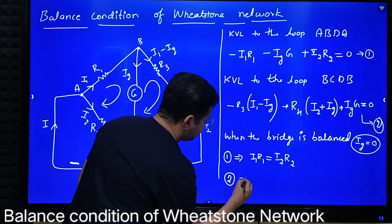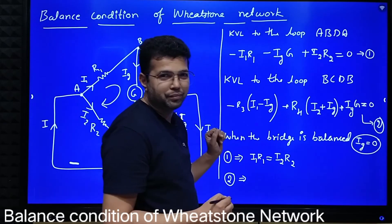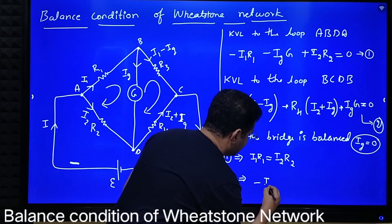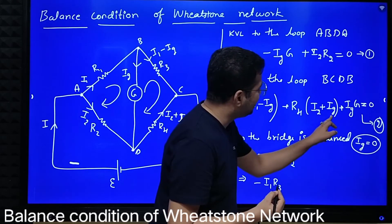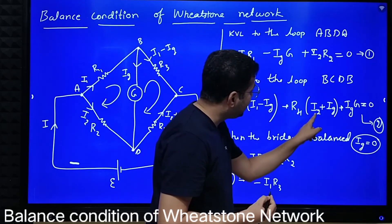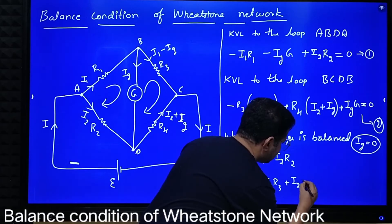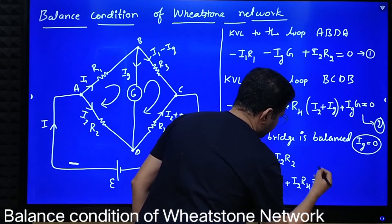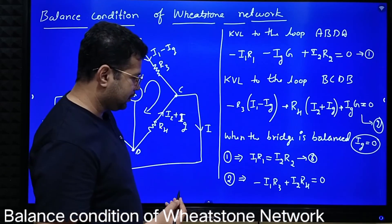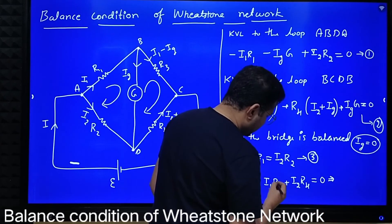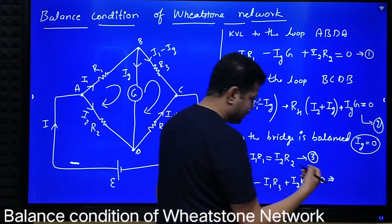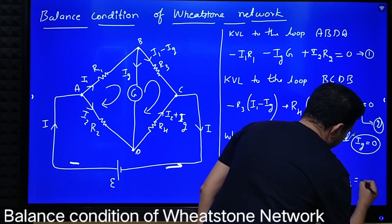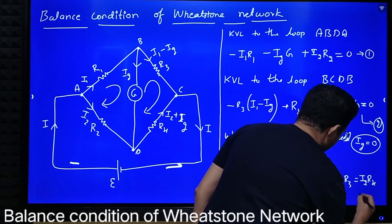Now for equation 2 with Ig equal to zero: the Ig terms vanish, giving minus I1 R3 plus I2 R4 equals zero. Taking I1 R3 to the RHS, we get I1 R3 equals I2 R4. This is equation number 4. So equation 3 is I1 R1 equals I2 R2, and equation 4 is I1 R3 equals I2 R4.